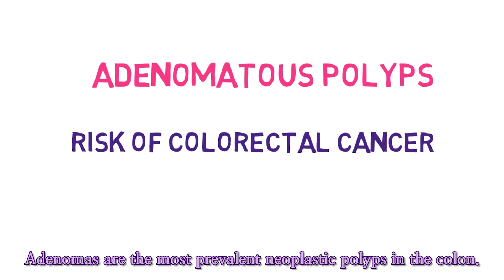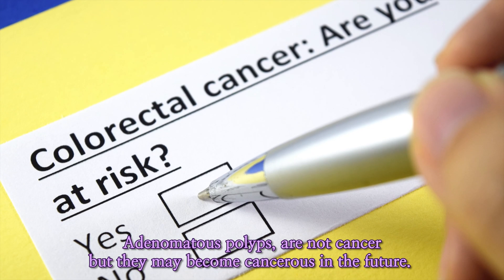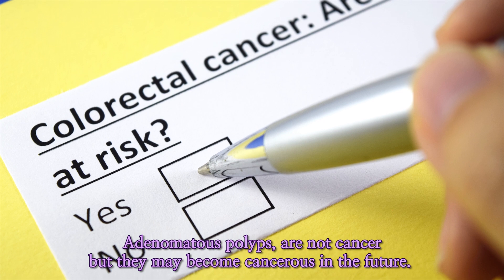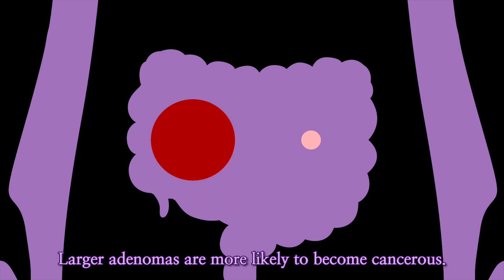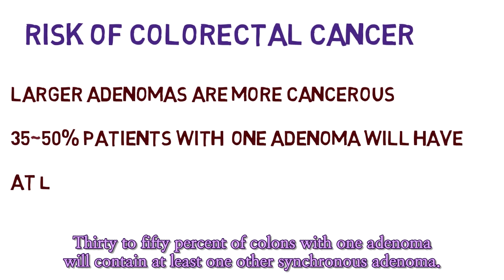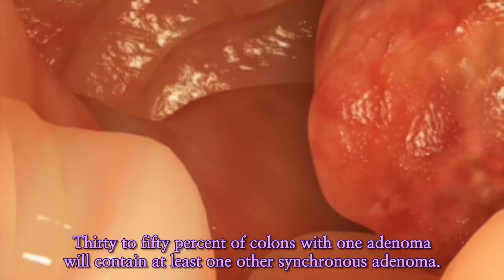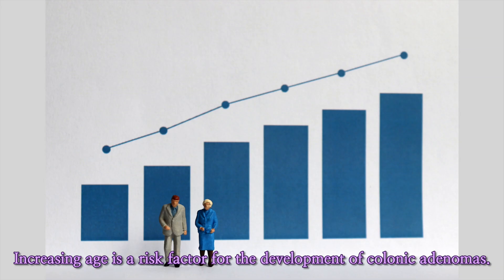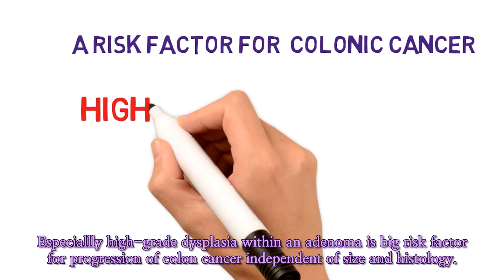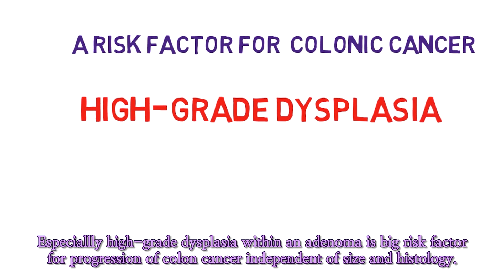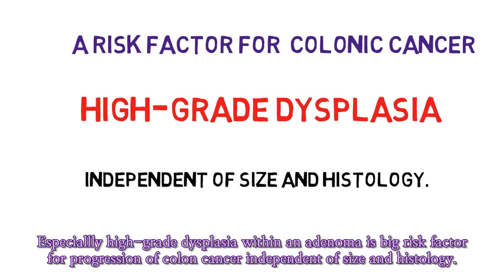Adenomatous polyps. Adenomas are the most prevalent neoplastic polyps in the colon. Adenomatous polyps are not cancer, but they may become cancerous in the future. Large adenomas are more likely to become cancerous. Thirty to fifty percent of colons with one adenoma will contain at least one other synchronous adenoma. Increasing age is a risk factor for the development of colonic adenomas. Especially high-grade dysplasia within an adenoma is a big risk factor for progression of colon cancer, independent of size and histology.